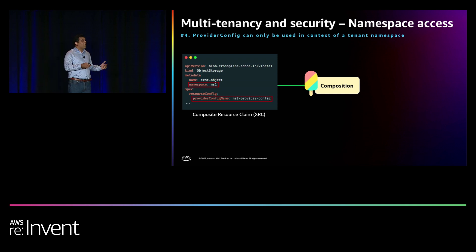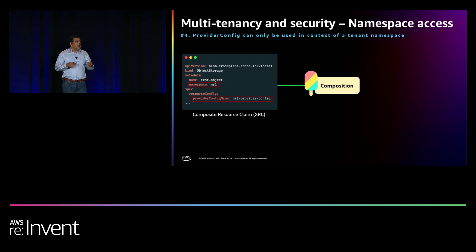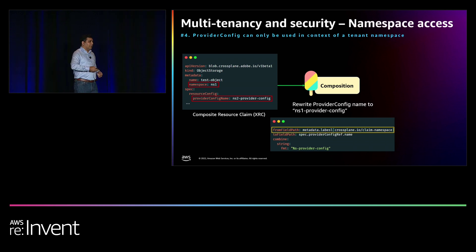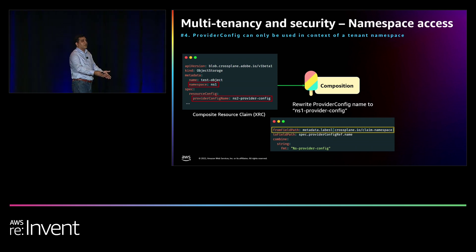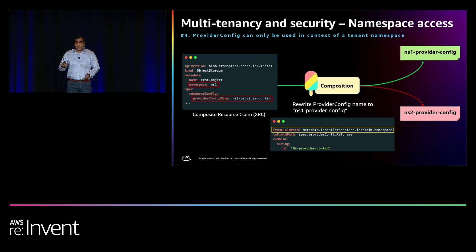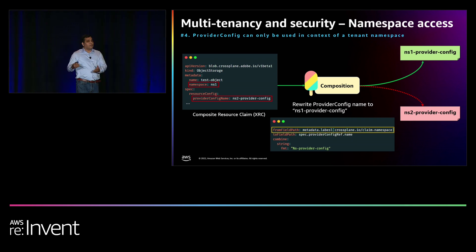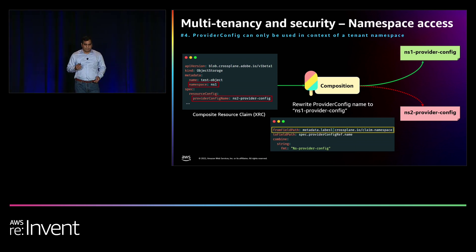For example, a tenant authors a composite resource claim trying to provision resources in a different tenant's AWS account, providing a different provider config name. In our composition definition, we have a patching configuration where we extract the namespace name from the composite resource claim and use it to infer the name of the provider config. Instead of relying on what the tenant provides, we infer it. Once inferred, we can prevent them from using a different provider config than the one associated with them. This works in scenarios where inference is good enough, and it also helps make provider config name optional or at least prevents use of an invalid one.